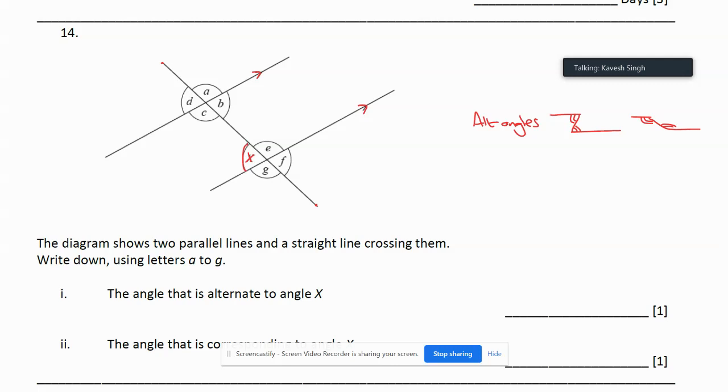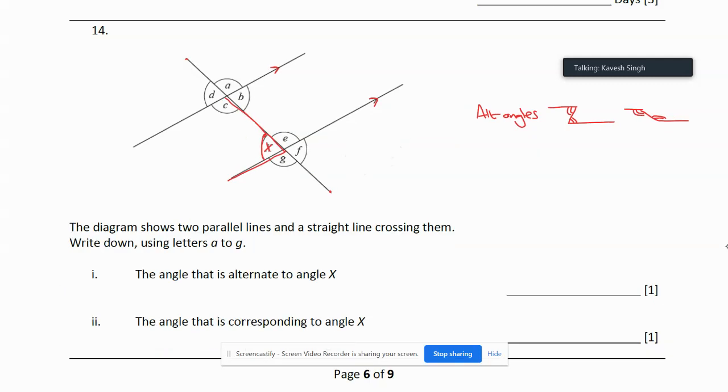So what we have to do is identify where these angles are. If I try and get some kind of Z shape to include x in it, it would have to be like this including the x, but then to get the Z I have to move the other way. So we know that b would be alternate to x over there.